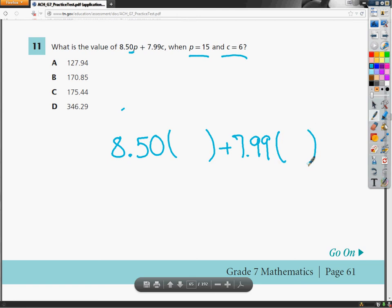All I've got to do now is make sure I put the right thing in the right spot. Well, 8.50 is touching the letter p, so I'm going to put its value right there, so 15. And then I'm going to do the same thing with 6.